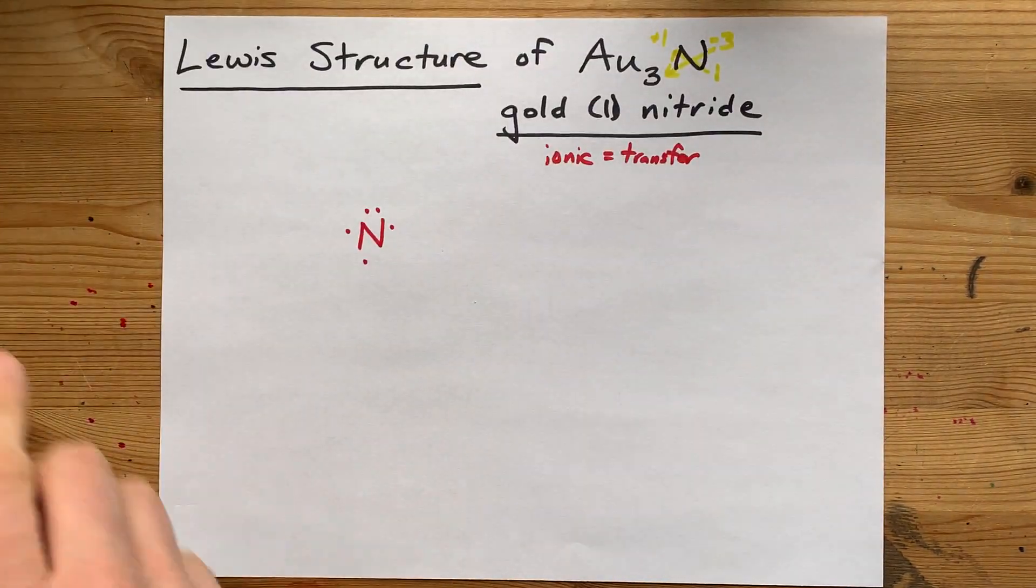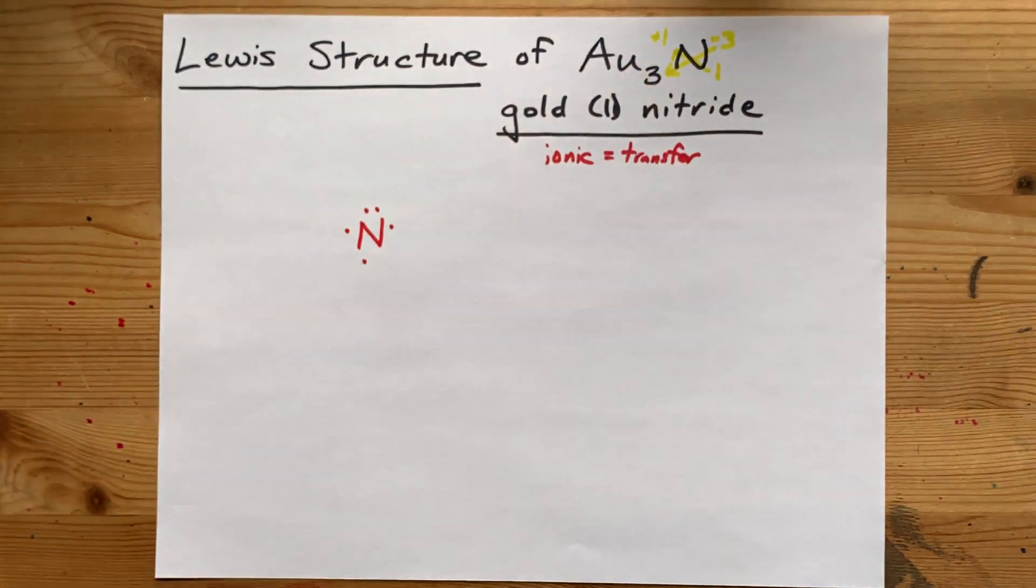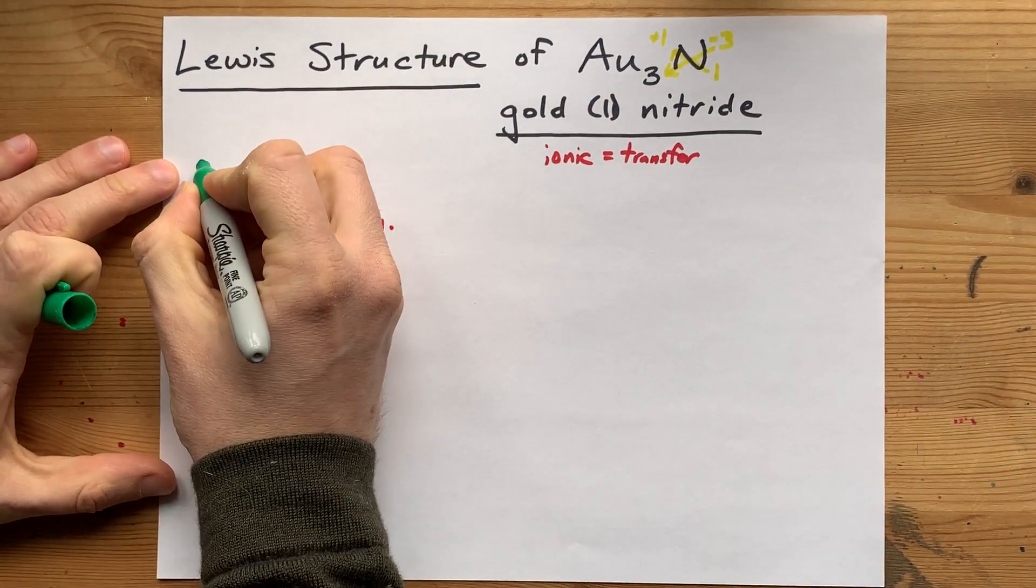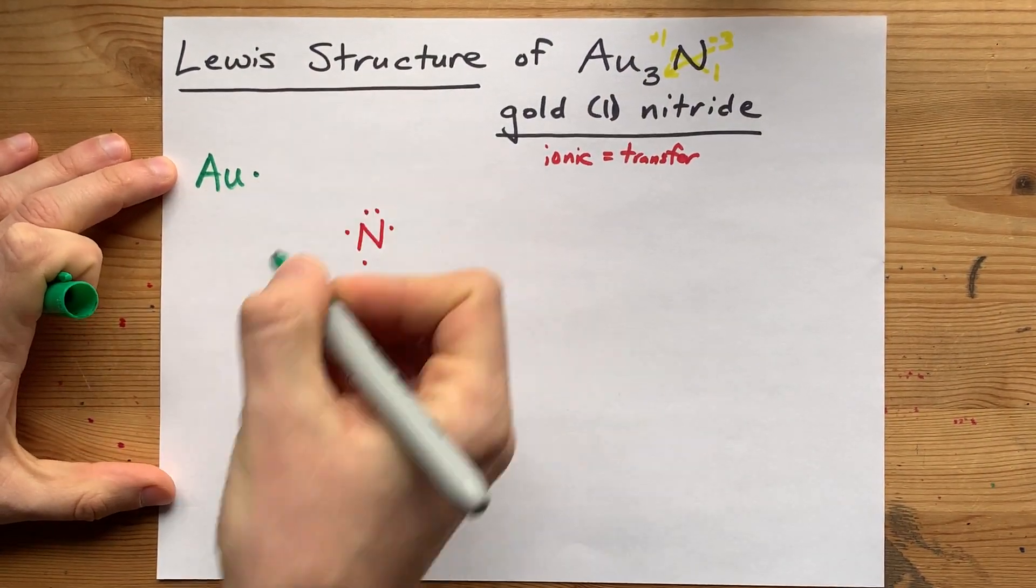Anyways, the point is that in gold one nitride, or AU3N, gold brings one valence electron.